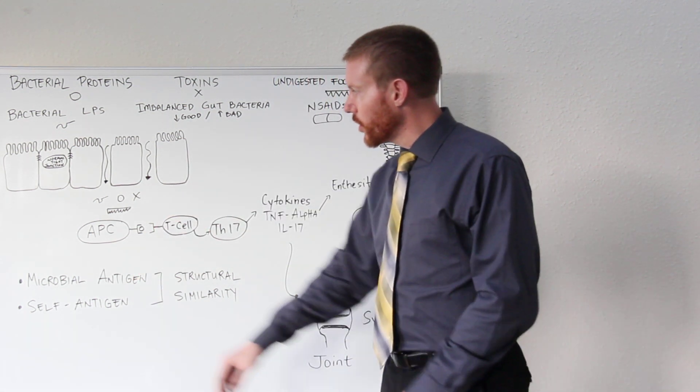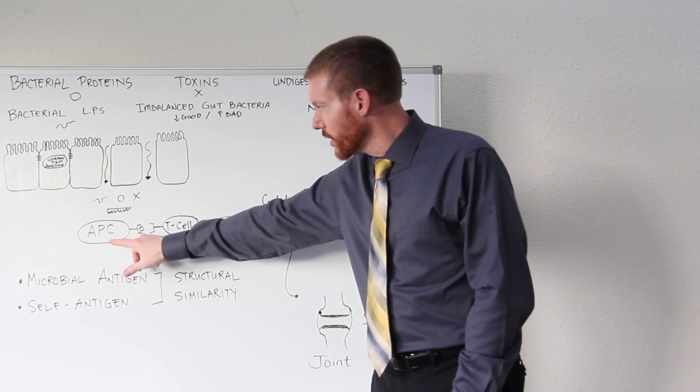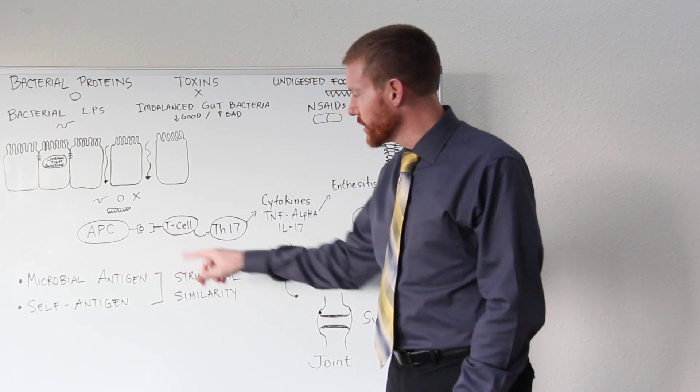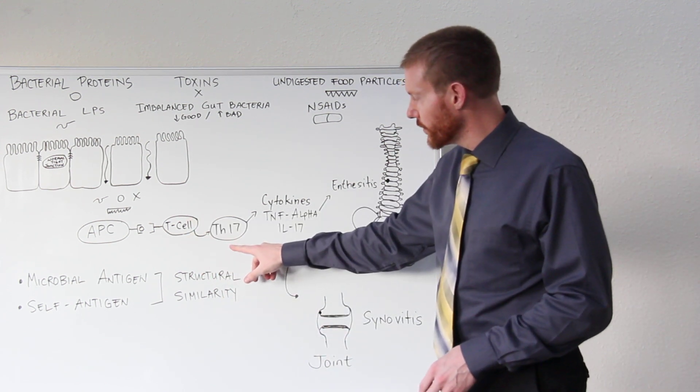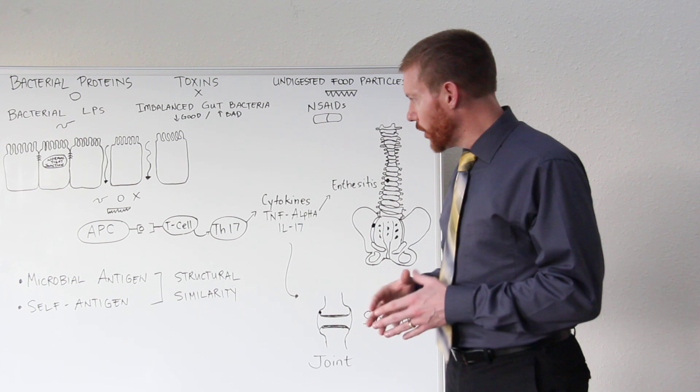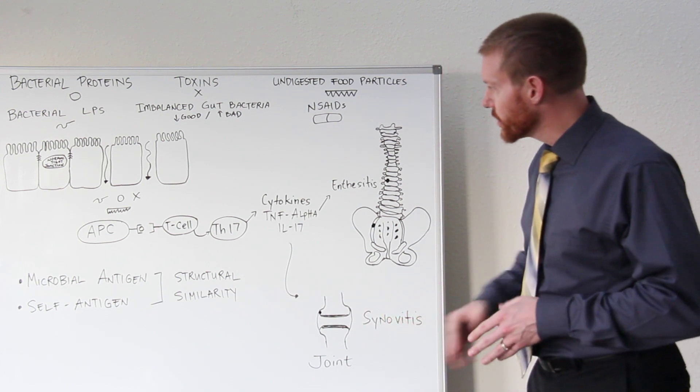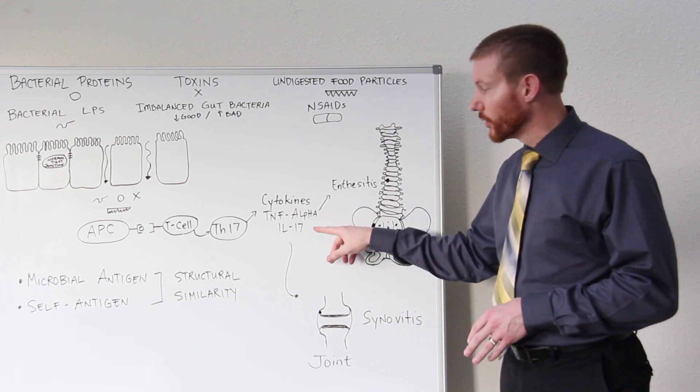...cells of the immune system called antigen-presenting cells present these products to T cells. T cells are then stimulated to become different types of T cells, and then they'll produce inflammatory cytokines such as TNF-alpha and interleukin-17.